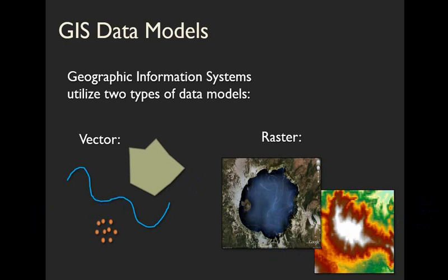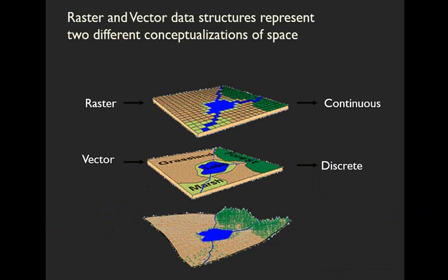We refer to vector data as discrete because it's defined by specific XY locations. Remember that XY locations define points. Rules connecting points create lines, and if lines start and end at the same place, it defines a polygon. So points, lines, and polygons are examples of vector data.